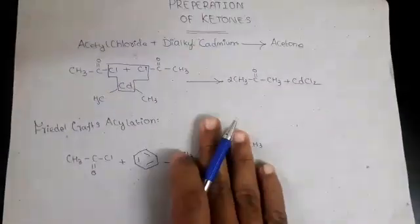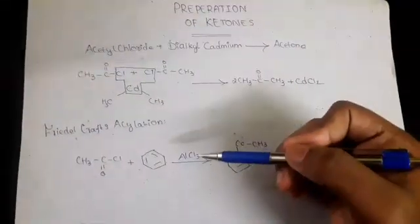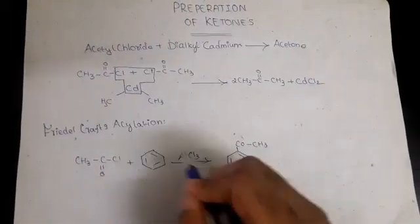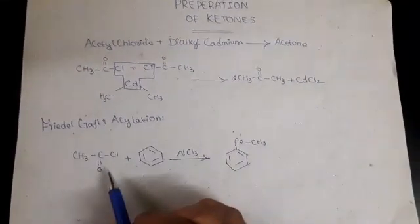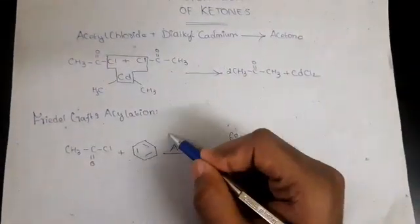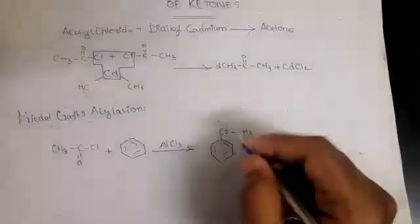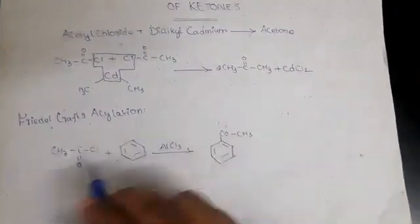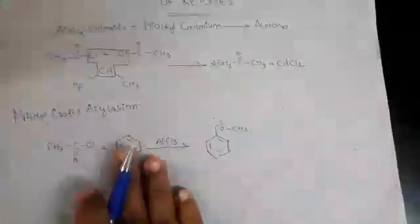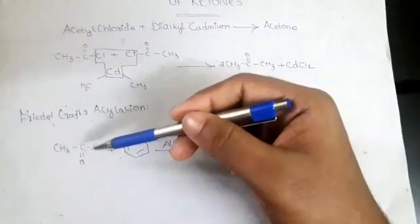The second method is Friedel-Crafts acylation, which you have studied in p-block elements. Aluminium chloride is used as a catalyst. Acetyl chloride is treated with benzene, an aromatic compound, to give an aromatic ketone with C=O and CH3 groups. This is how aromatic ketones are prepared.